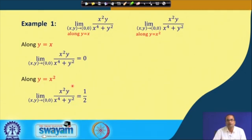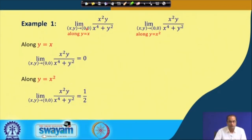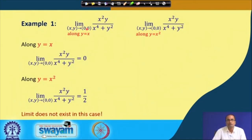Since the limits along the two paths are different (0 and 1/2), we can conclude that the limit of x²y / (x⁴ + y²) as (x,y) → (0,0) does not exist.